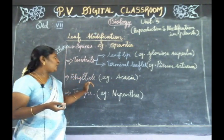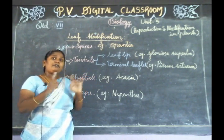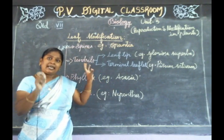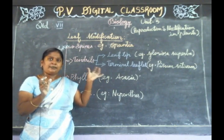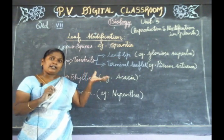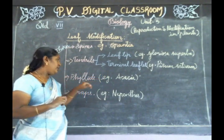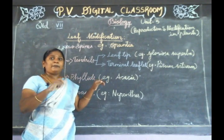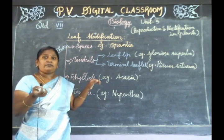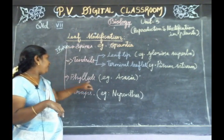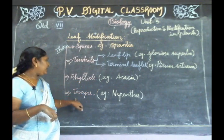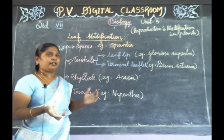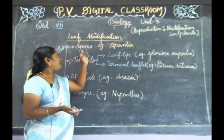The next one is the phyllode. Note the difference: phylloclade is a stem modification, whereas phyllode is a leaf modification — specifically the petiole is doing the function of the leaf. The last one is the trap, where the leaf is modified into a trap-like structure. We will see further details.